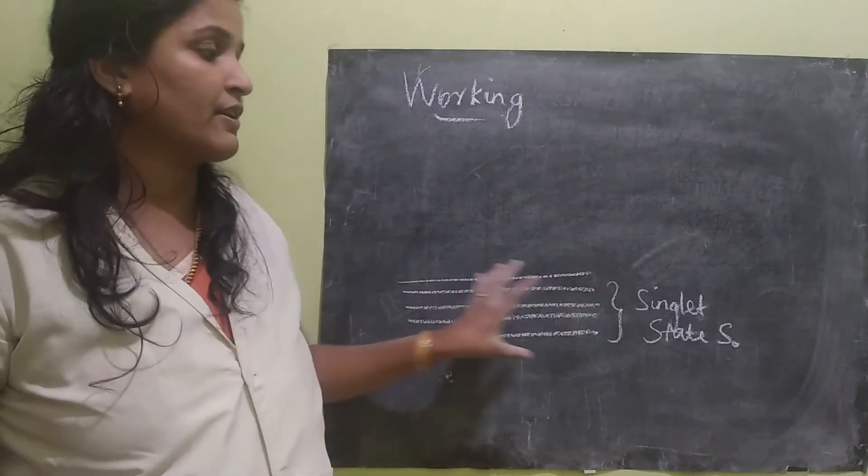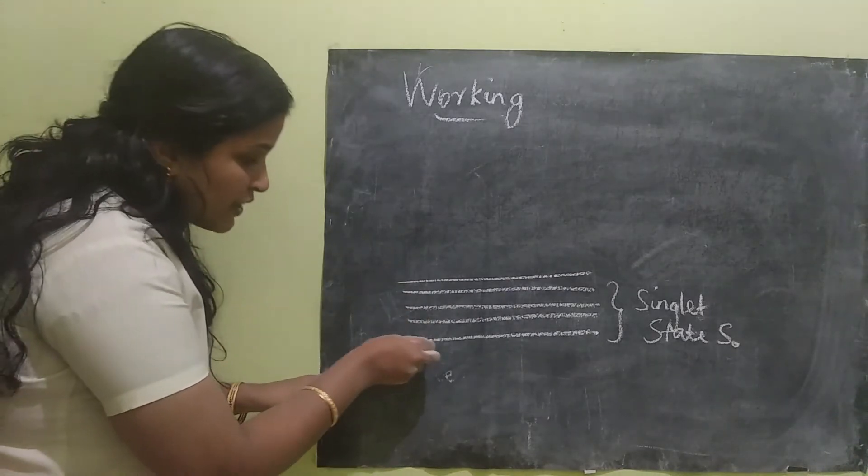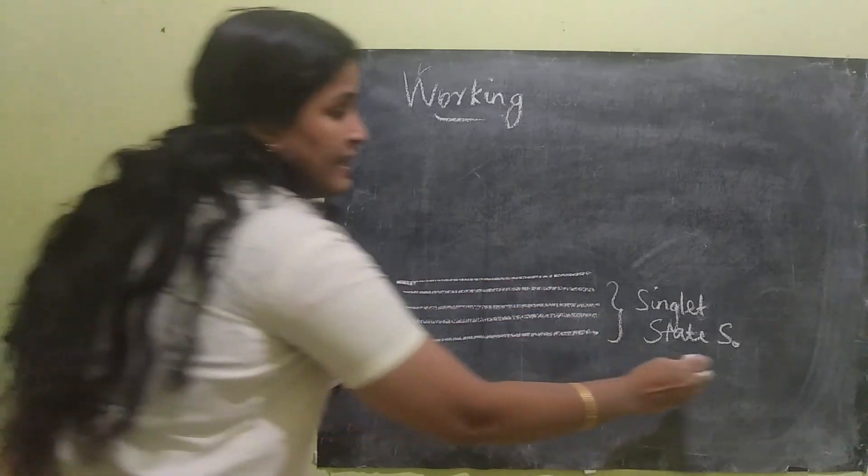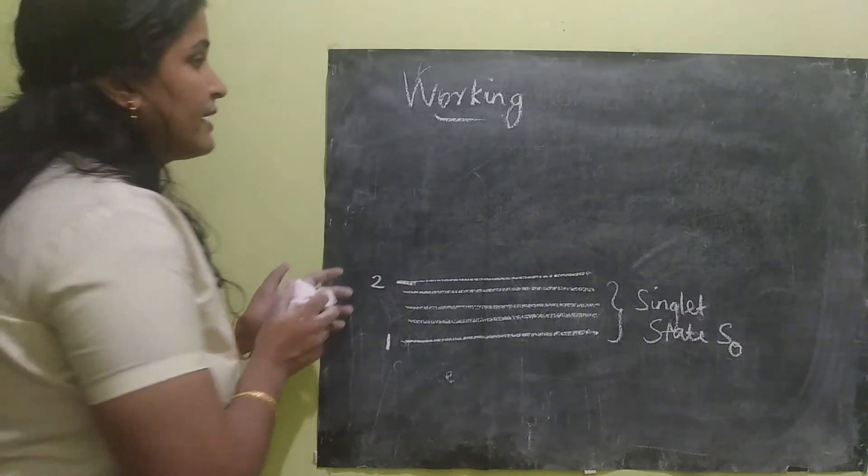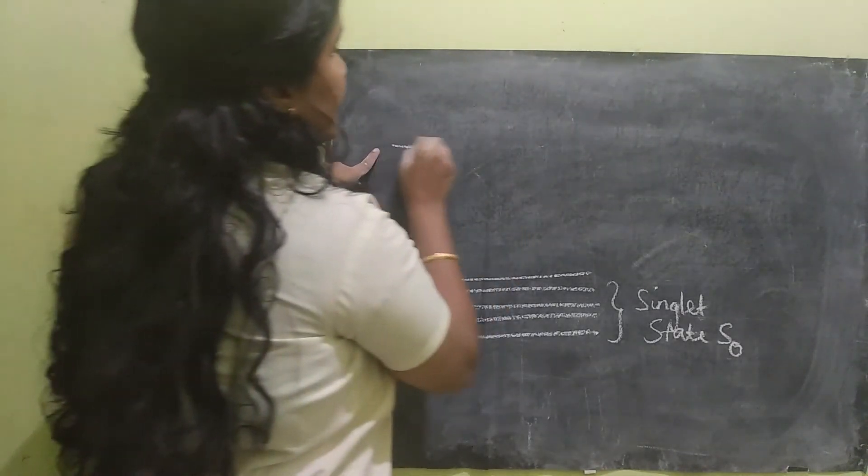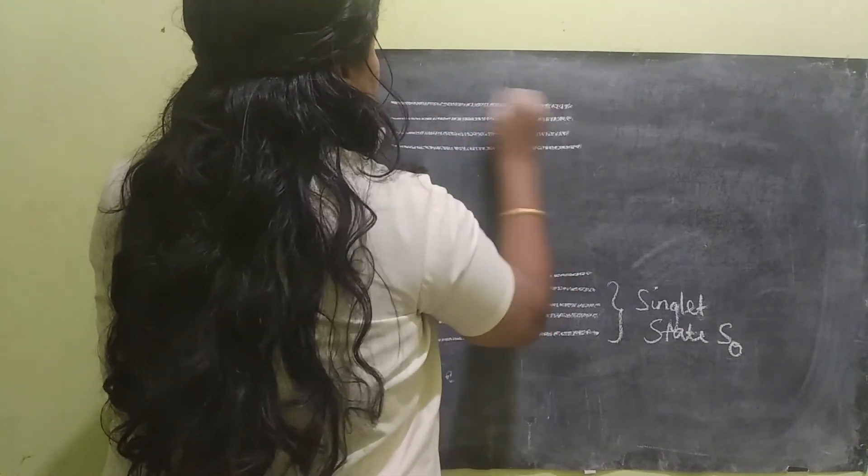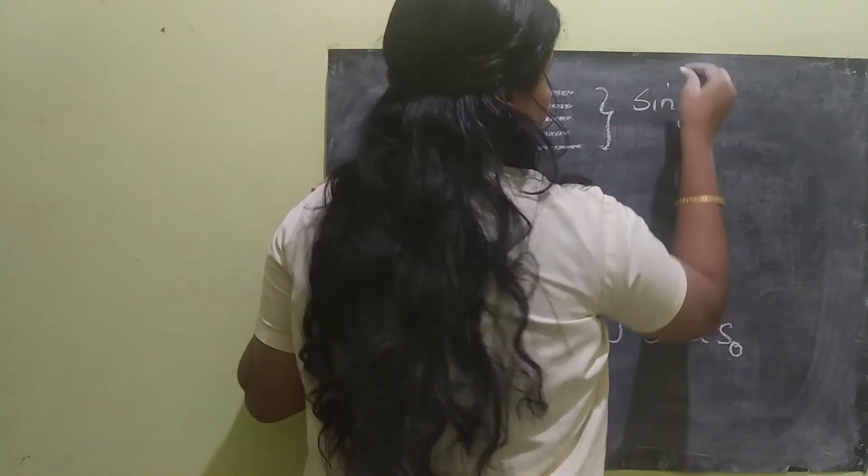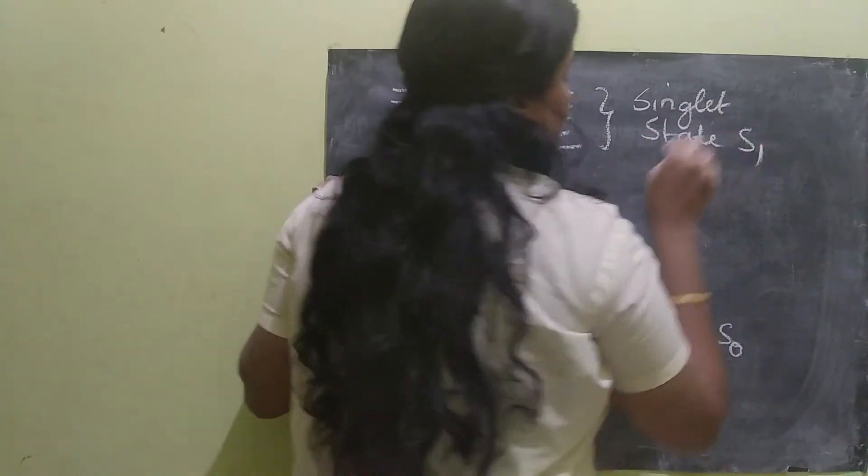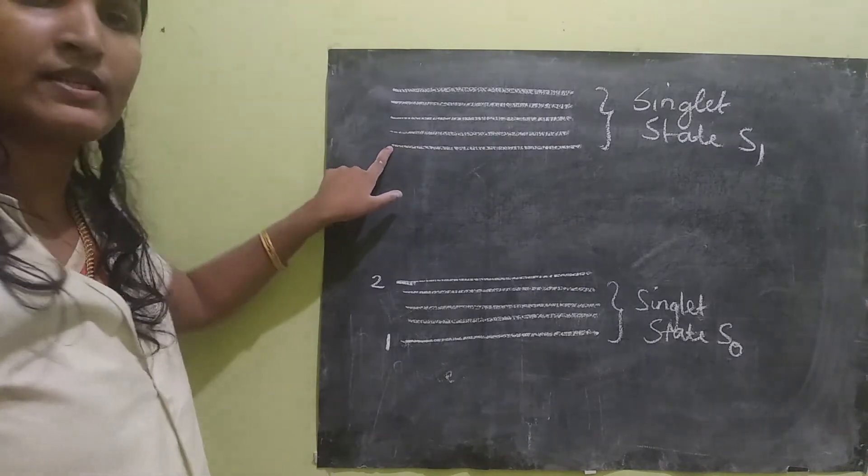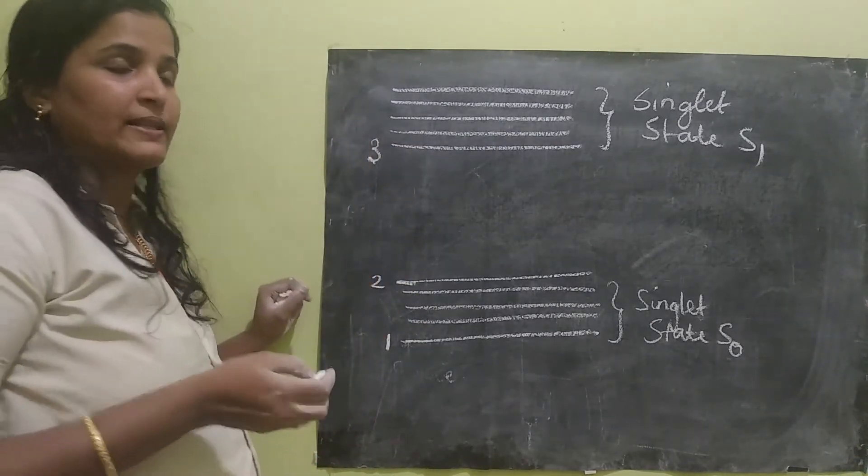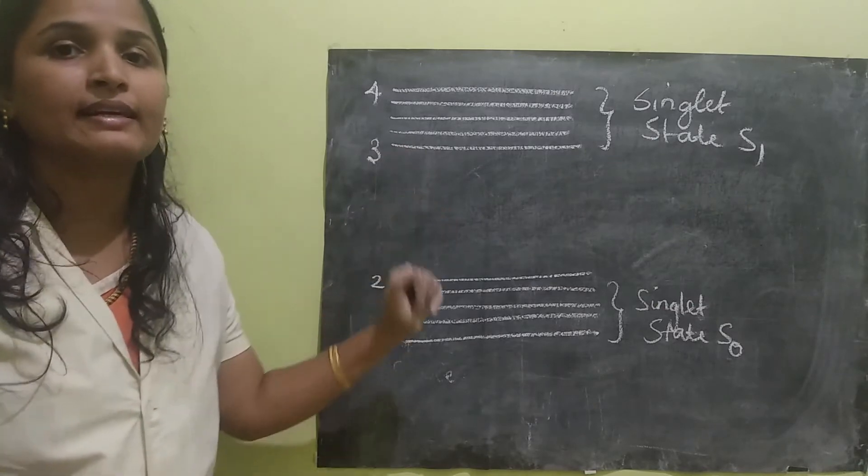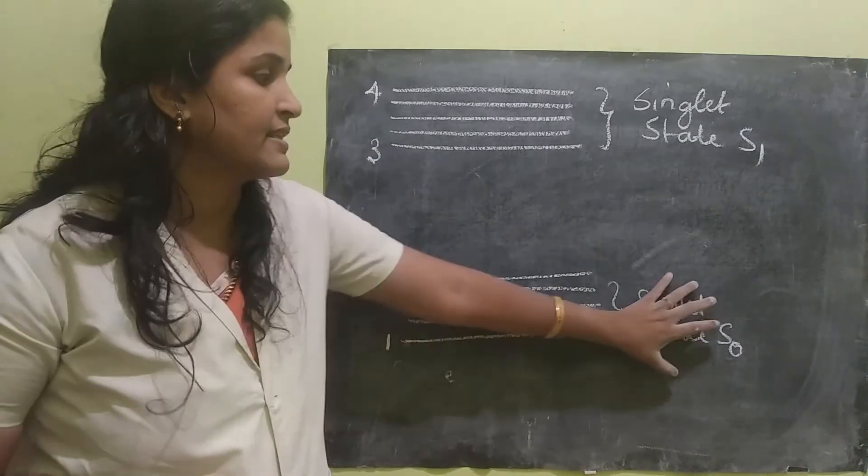This is a set of energy levels. We will call this as singlet state S naught. This is the set of energy level, lower energy level. I will name the lowest energy level as 1, and the top energy level among this singlet state S naught will be 2. Similarly, let's draw another set. This set will be named as singlet state S1. Here also the lowest energy can be named as 3, energy level 3, and the highest will be named as energy level 4.